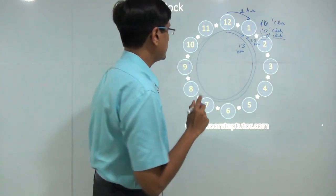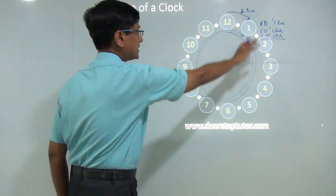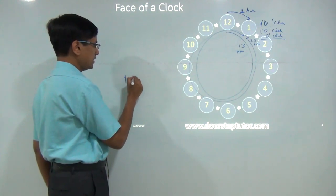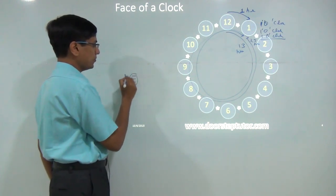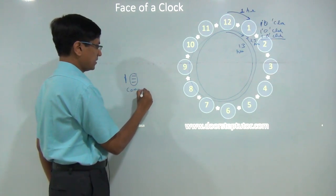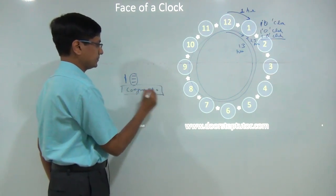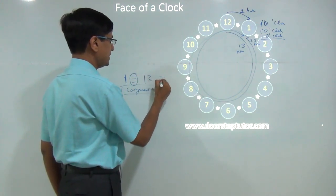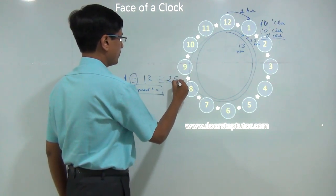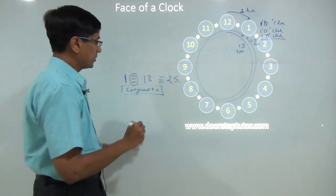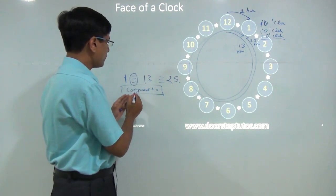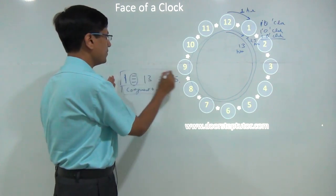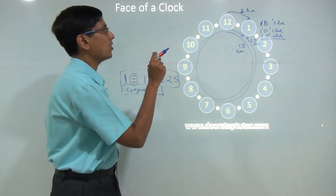So what does this mean? On this clock face, in this clock world, 1 is equivalent to — or we say congruent to — 13, and is also congruent to 25. These three numbers are exactly equivalent; they are exactly congruent.